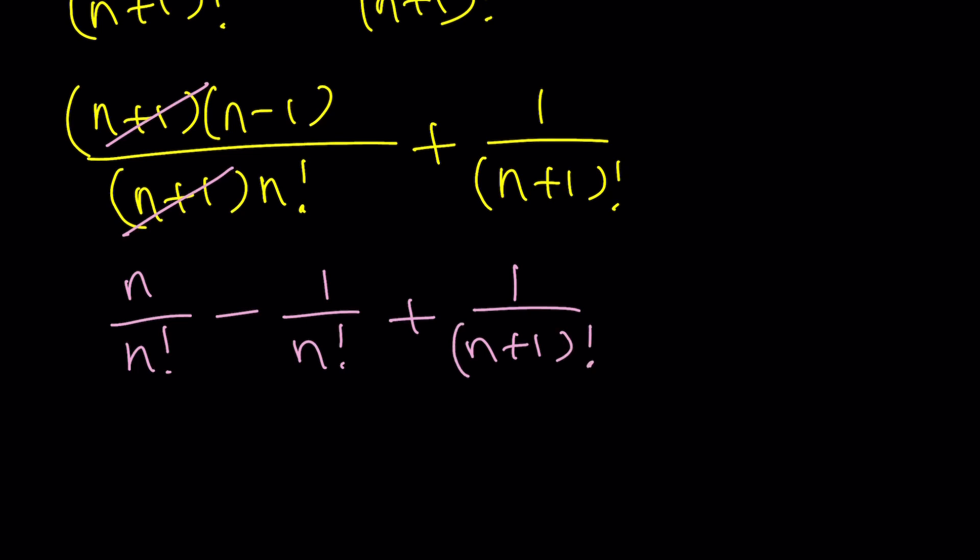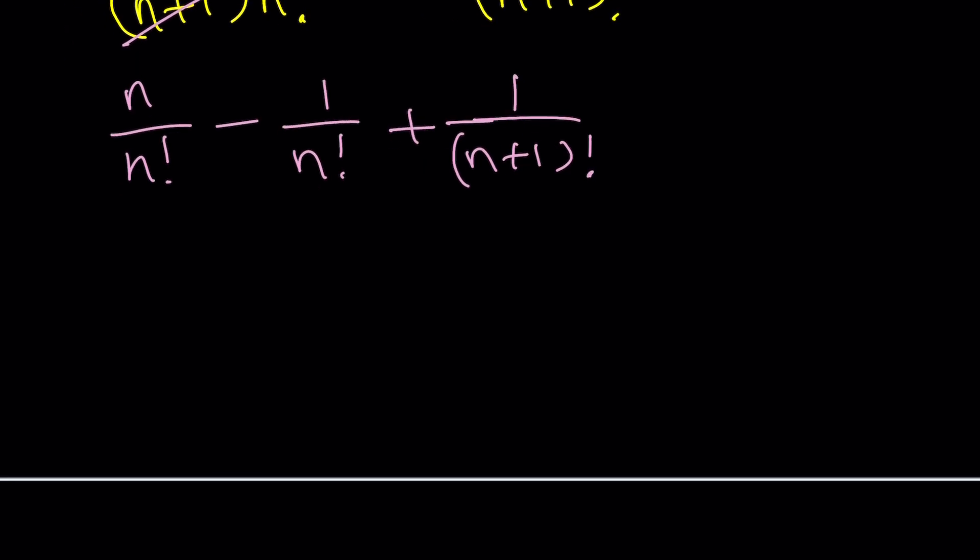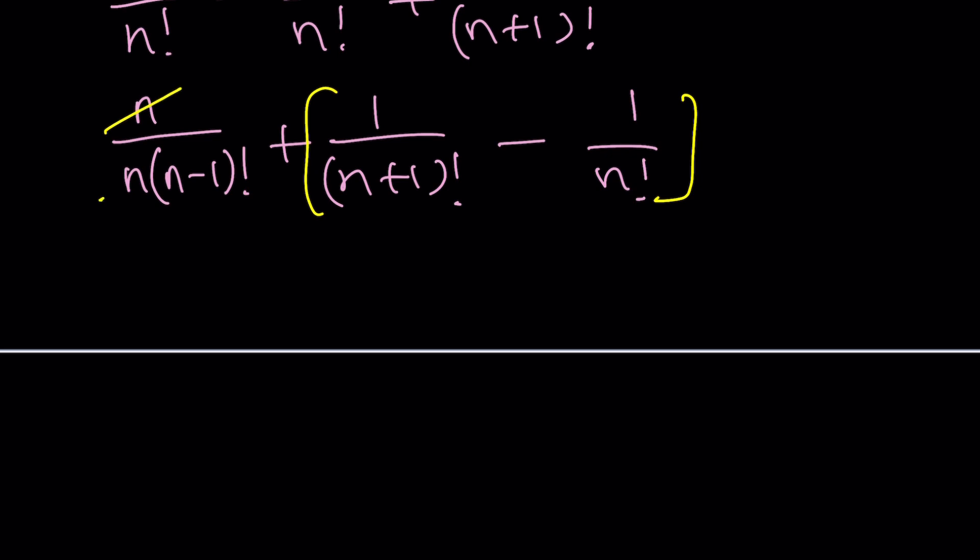How do you simplify this? n plus 1 cancels out. And n minus 1 can be split up. Let's do it: n over n factorial minus 1 over n factorial plus 1 over n plus 1 factorial. This may look messy, but don't worry, we're gonna put it together. n factorial can be expanded once. And I want to kind of switch these around so that we can get a telescoping sum, which means a lot of terms, infinitely many, are going to cancel out. So I want to treat this separately.